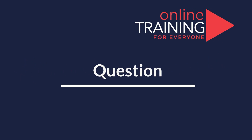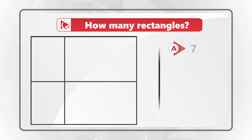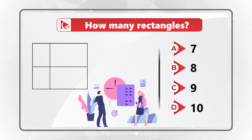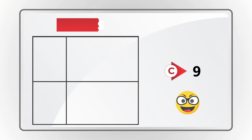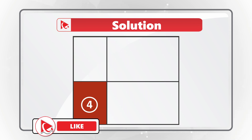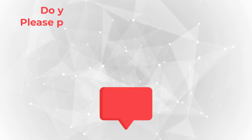I love this question because it seems very simple but the answer is extremely surprising. You need to determine how many rectangles are present in the shape. Choices are: A — 7 rectangles, B — 8 rectangles, C — 9 rectangles, D — 10 rectangles. Hard to believe, but I counted 9 rectangles in this shape. Let me show them all to you: 1, 2, 3, 4, 5, 6, 7, 8, and 9. Do you see any other answer? Please make sure to post in comments.